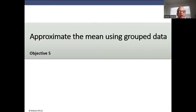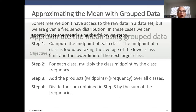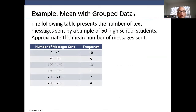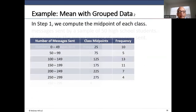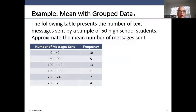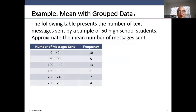To approximate the mean using grouped data, first calculate the midpoint of each class. The groups are: 0–49, 50–99, 100–149, 150–199, 200–249, 250–299. For the midpoint, we add the lower bound of one class plus the lower bound of the next class and divide by 2. So for 0–49: 0 plus 50 divided by 2 equals 25. For 50–99: 50 plus 100 divided by 2 equals 75. The midpoints are separated by 50, which is the class width.